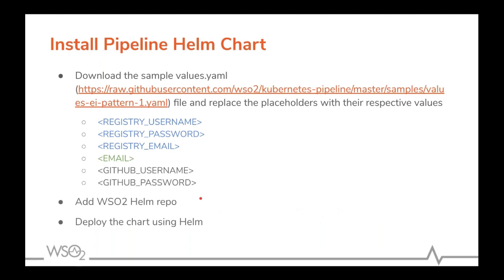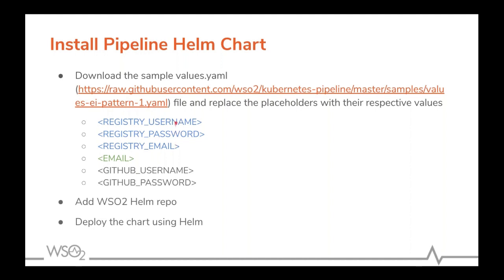The first step in installing the pipeline is to provide a values YAML to configure your private Docker registry, GitHub credentials, and application configurations on top of the plain WSO2 Kubernetes pipeline chart. At this URL, we have provided a sample values YAML to get started with the Enterprise Integrator pattern one — Enterprise Integrator with Analytics. Once you have that, you fill in your registry username, password, email, and an email address for build notifications.